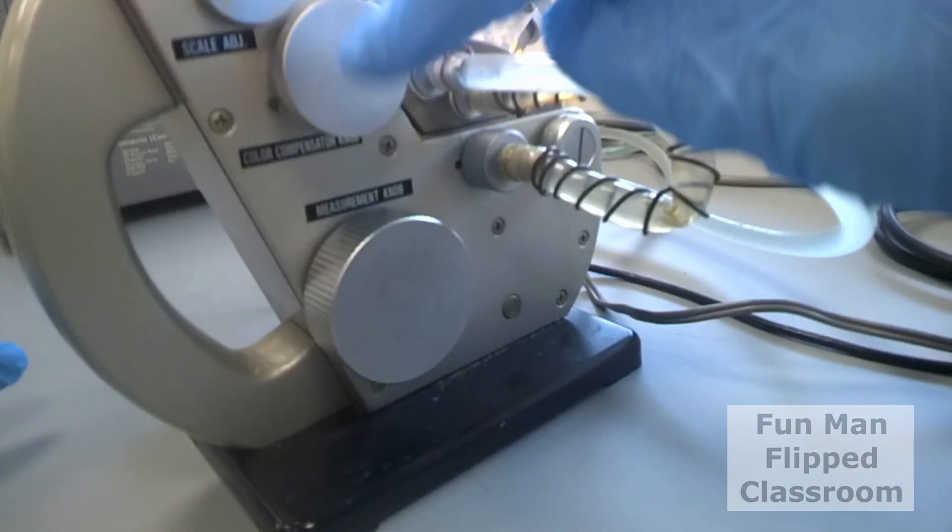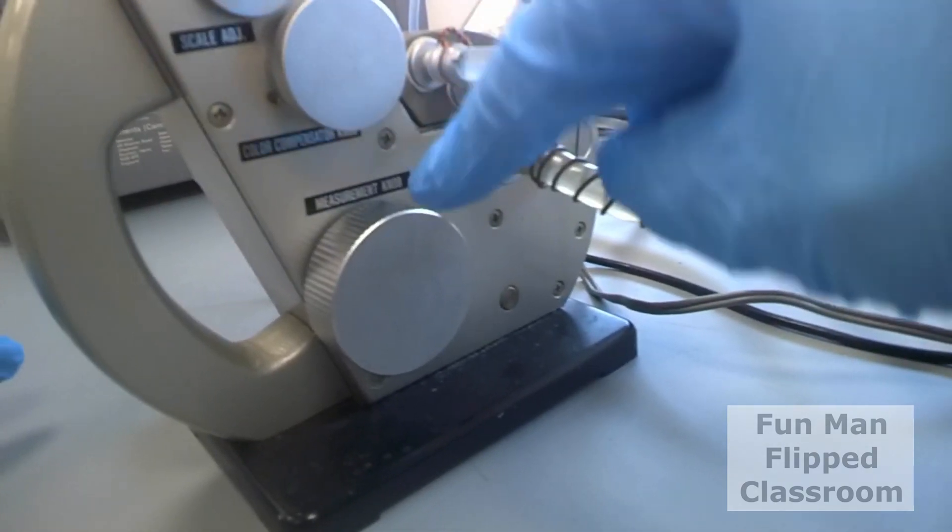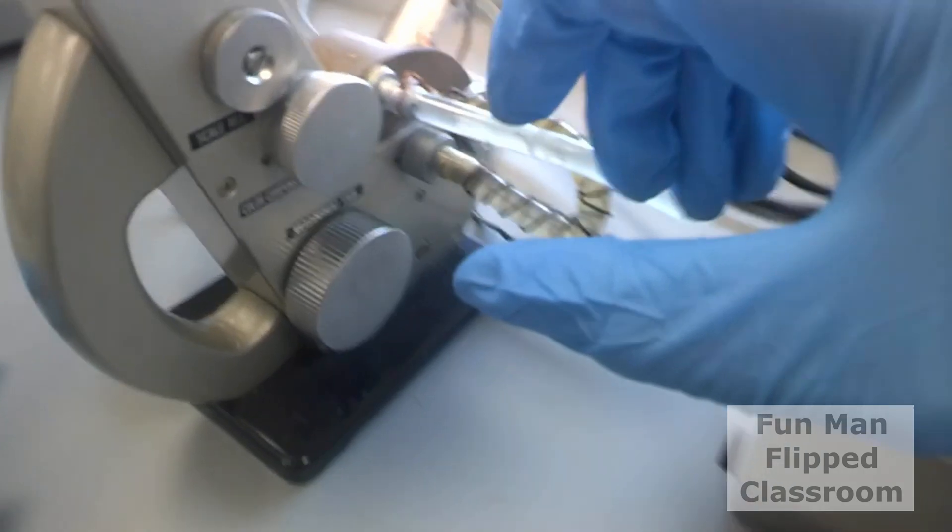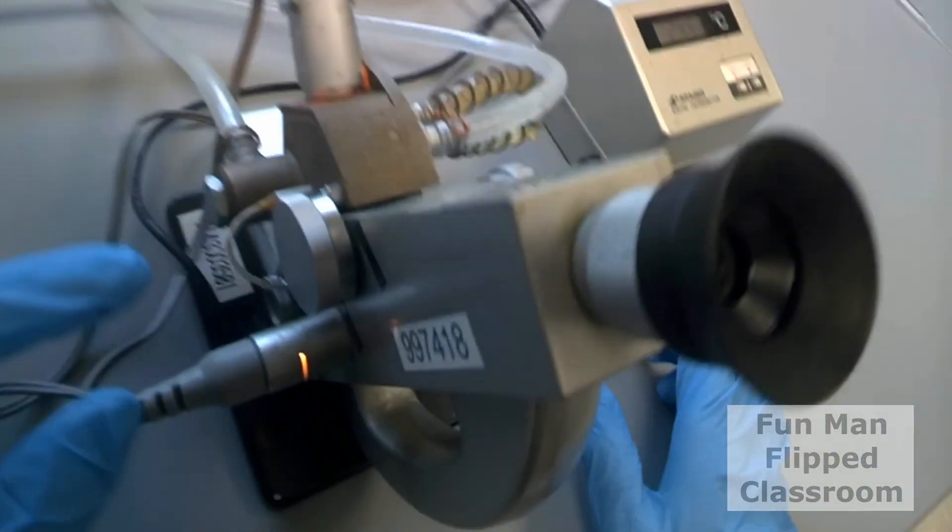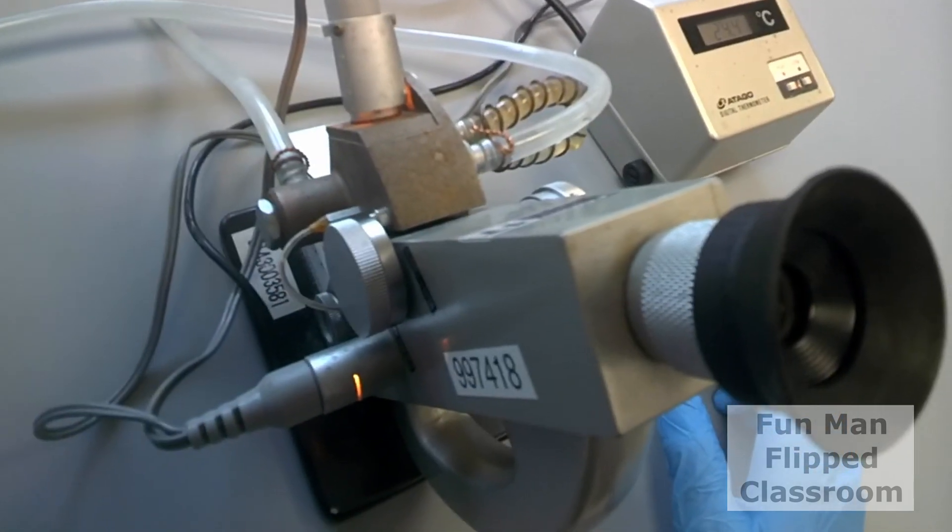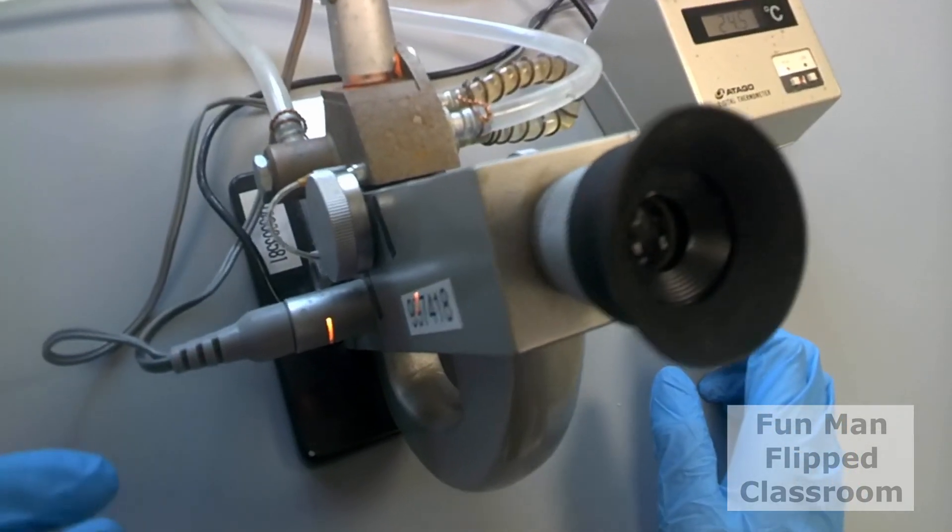Now first, the color compensation knob. Next, the measurement knob. Both knobs will be adjusted using your right hand. On the left, there is a prism switch. Open and close the switch. It is super old school, but it's so robust.